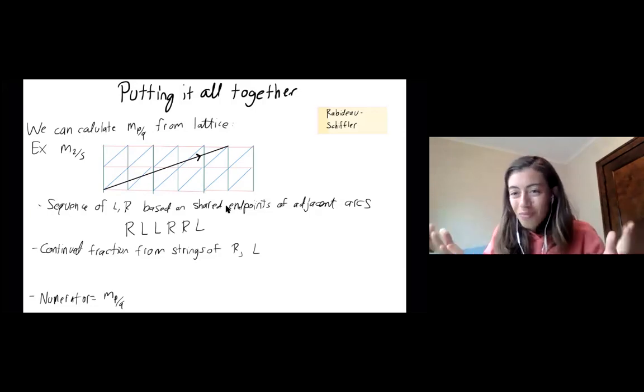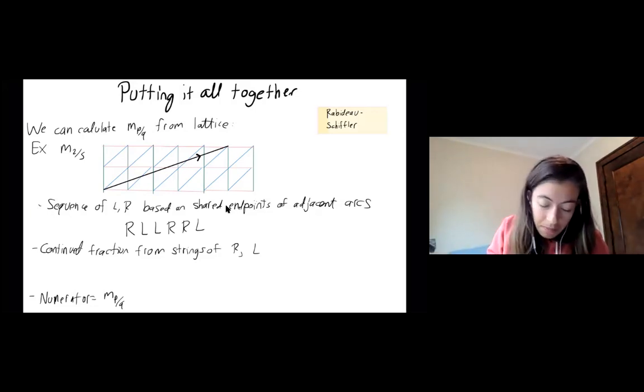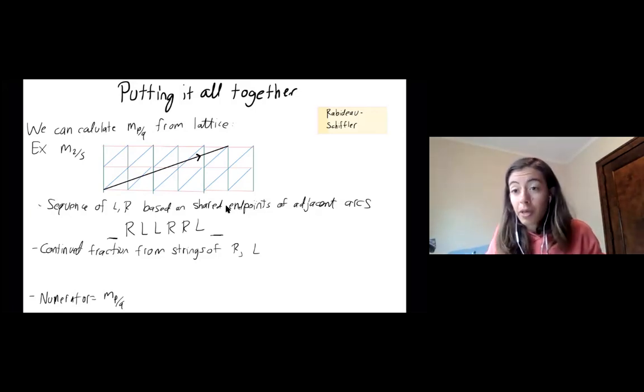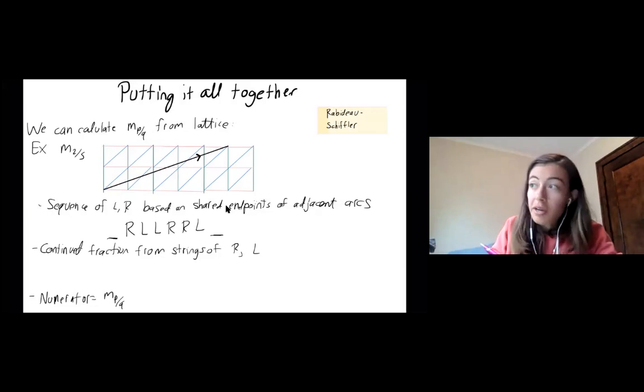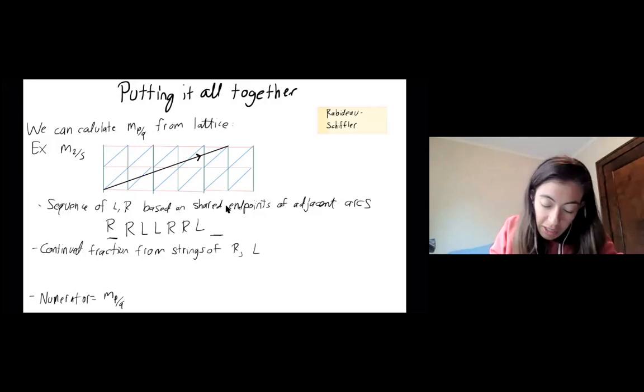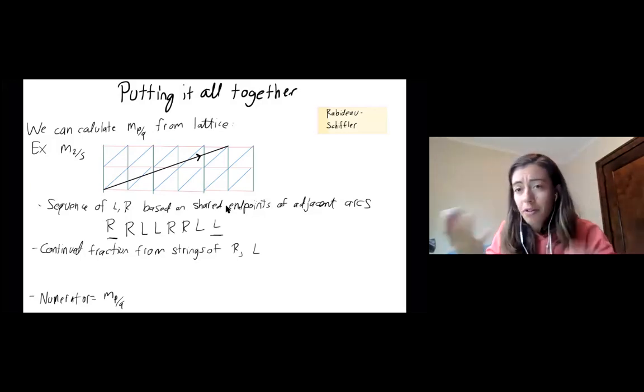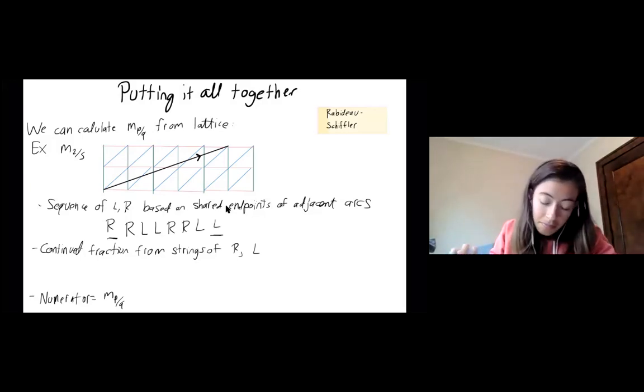And then we're just going to throw in an extra, we throw in an extra letter to both sides. It doesn't matter what you pick, because what we're going to do is cook up some sort of continued fraction where it will be sort of invariant what we choose. So I'm just going to put an R here and an L here, but you could flip them if you want. You could do them both Rs, both Ls, and so on.